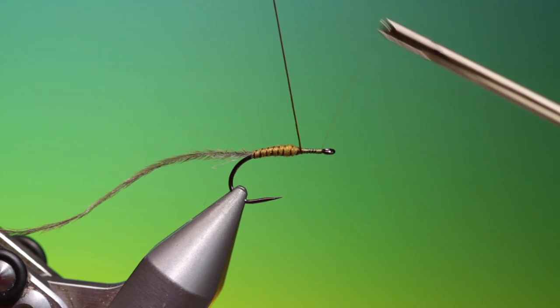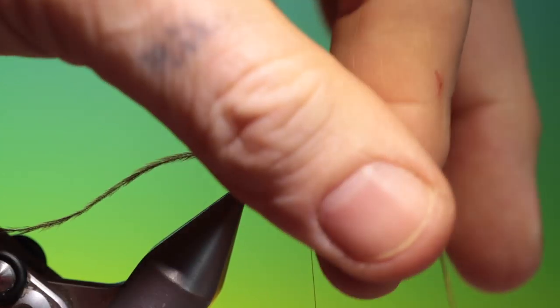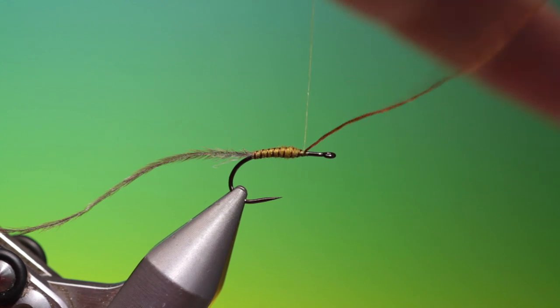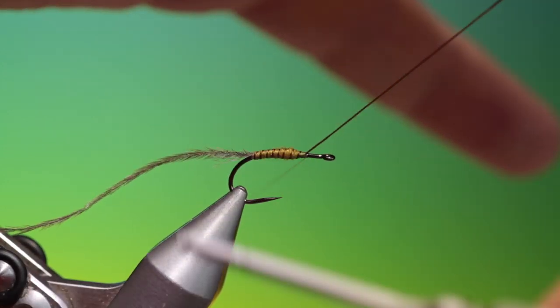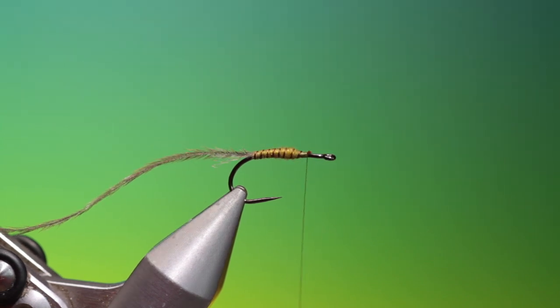And then just unwind that tying thread again, reverse it to there and then just tighten that down and remove it.